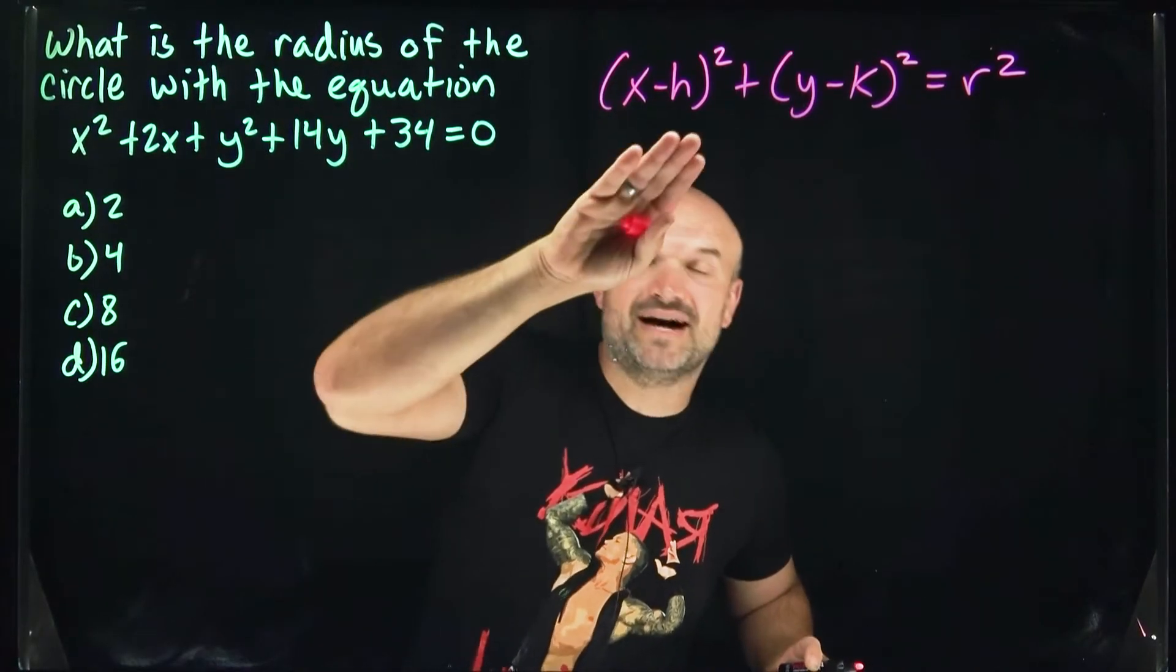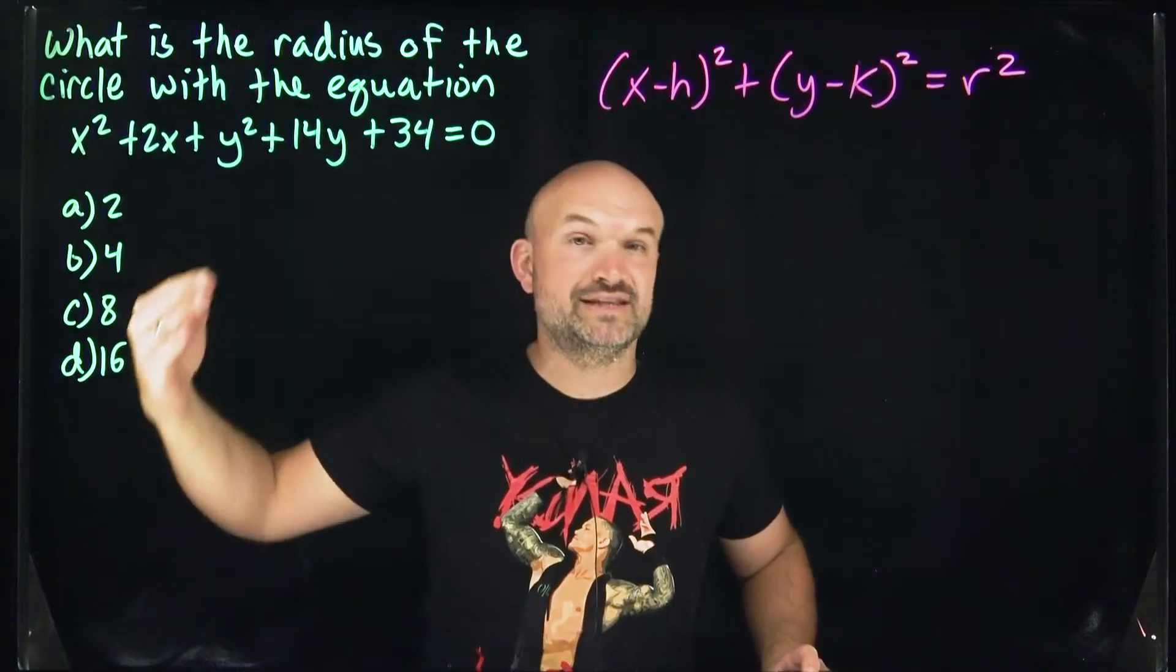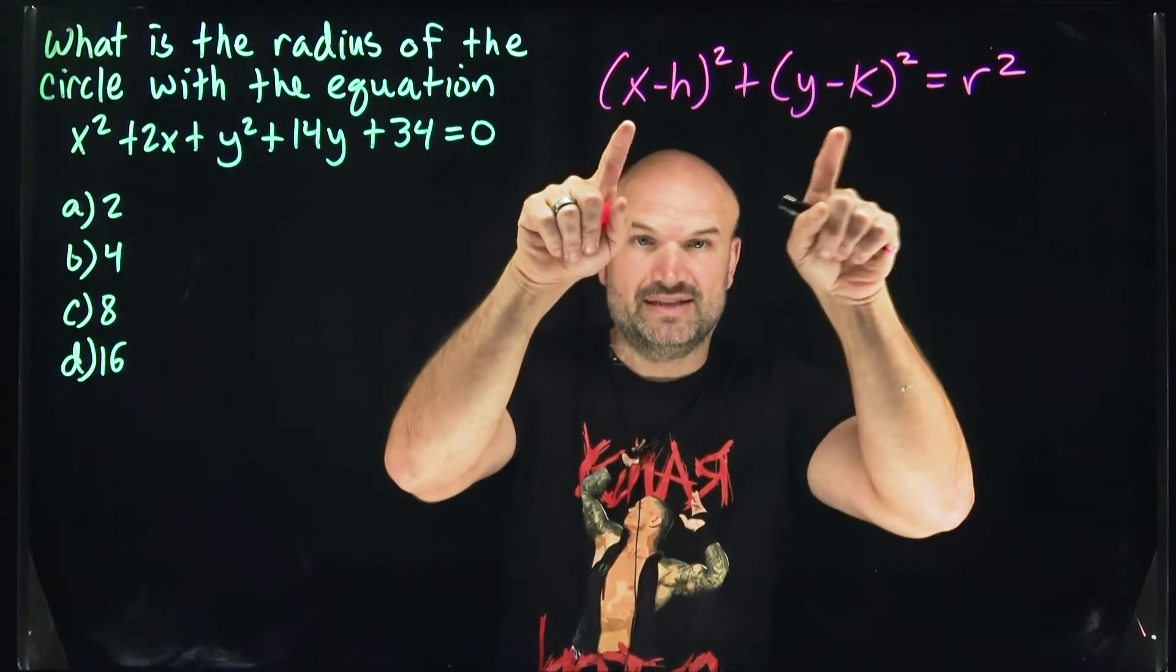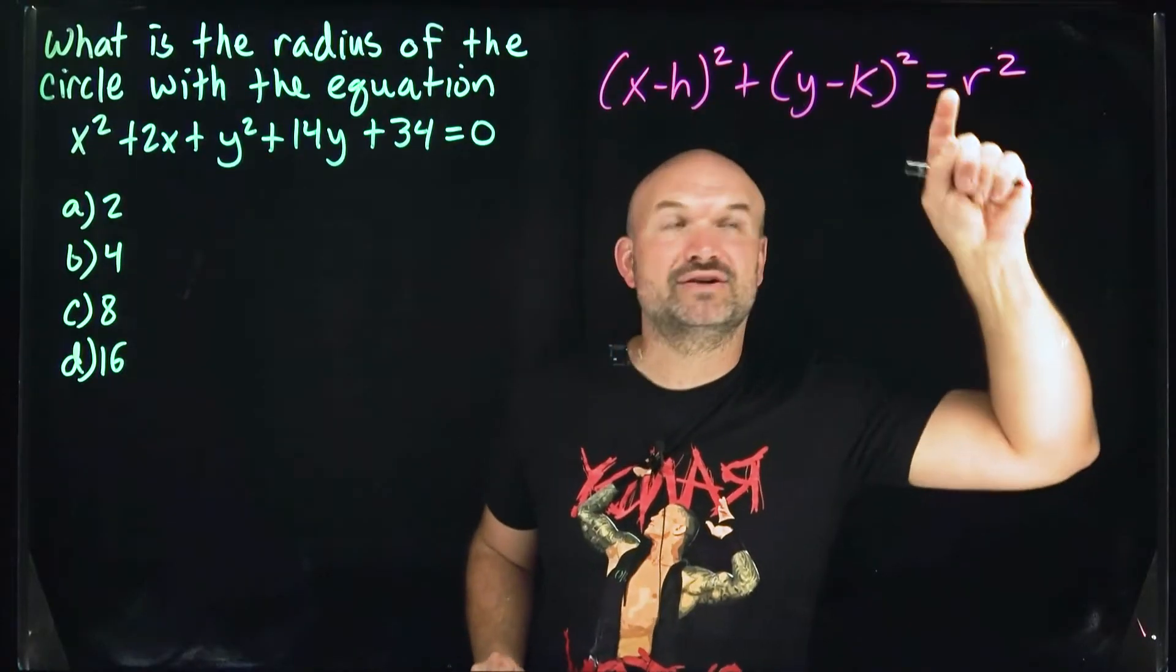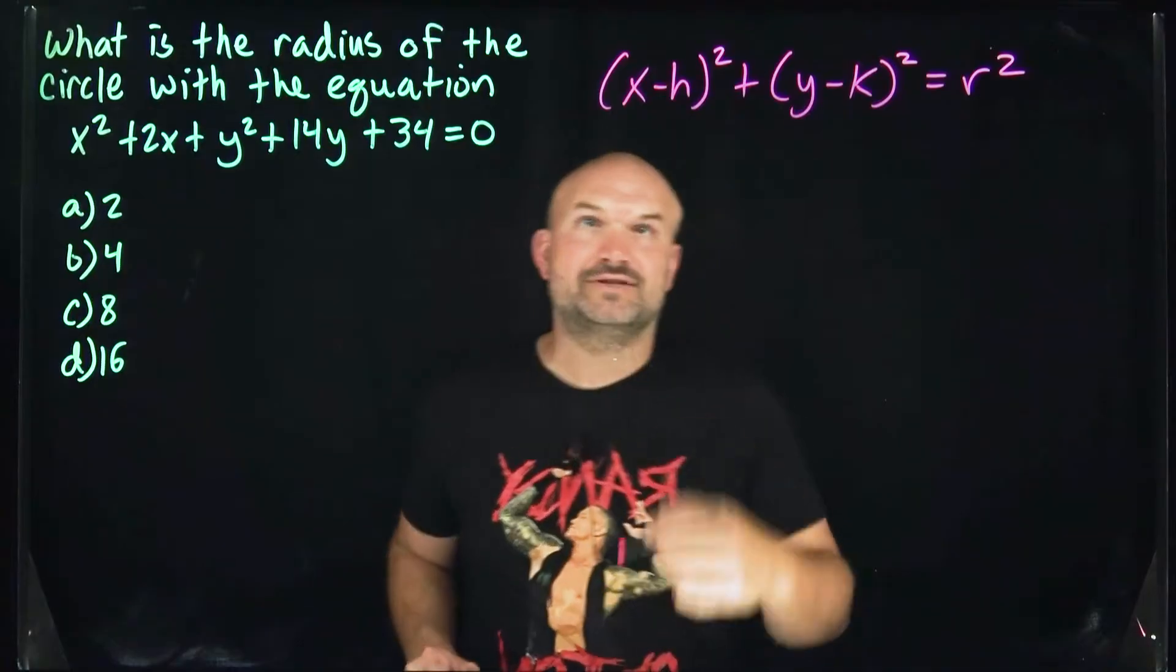Now, our equation doesn't have binomial squares. So we need to apply the process of completing the square to identify the values that will create these binomial squares. We'll have to add the same values to the right-hand side. I'll explain as we work through it.